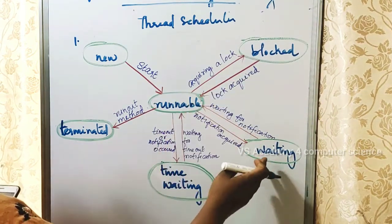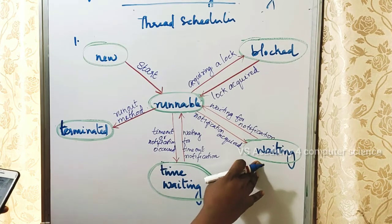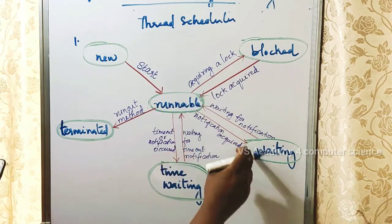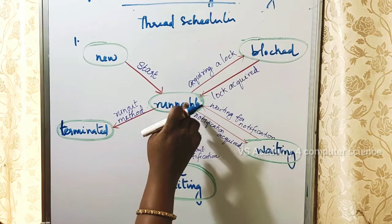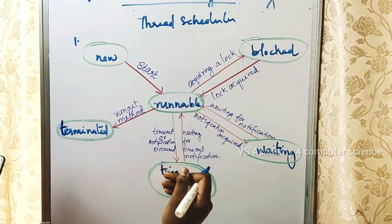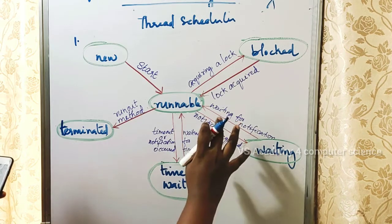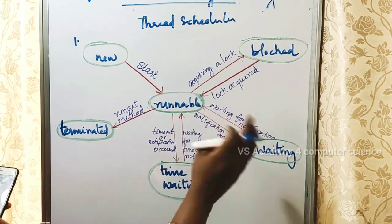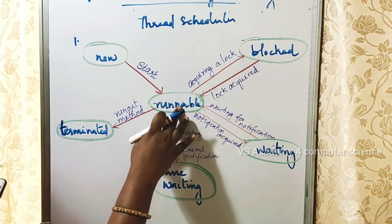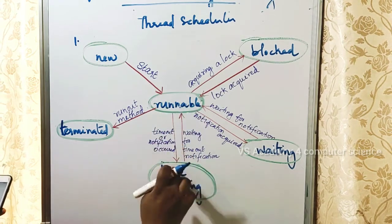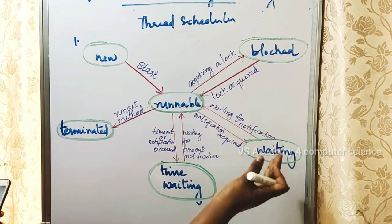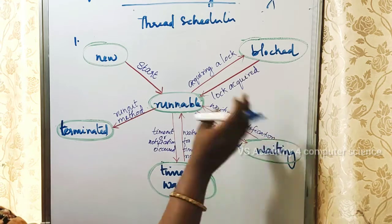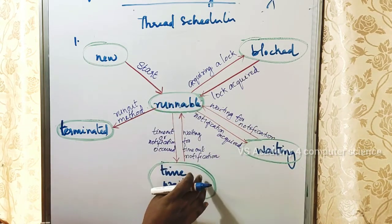The next inactive state is the waiting state. The waiting state is commonly used when a thread needs to wait for input/output operations. The thread starts as runnable but goes to a waiting state during I/O. Once the I/O completes, it returns to the runnable state.